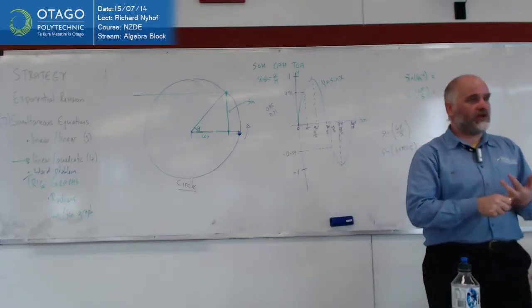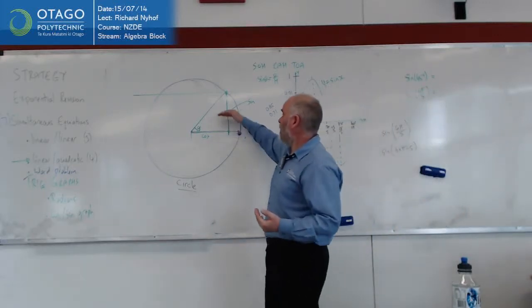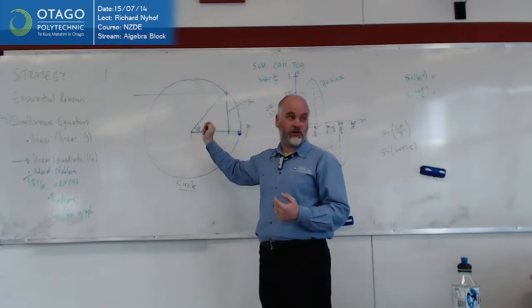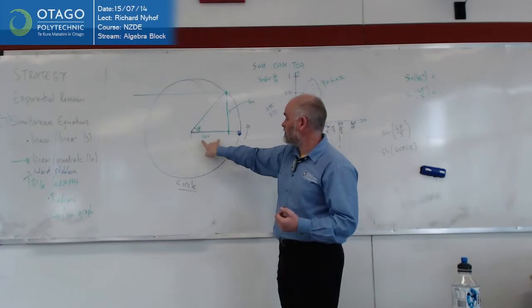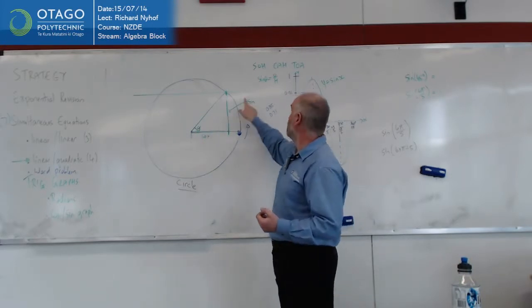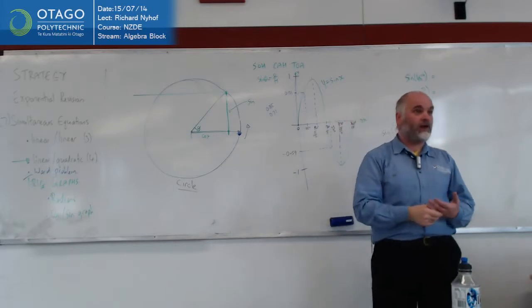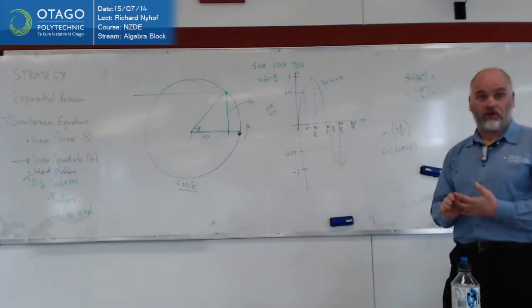Okay, so sine answers the question, how far up are we? But we also want to be able to answer the question, how far across are we? And how far across is the adjacent, which is cosine. So if we do exactly the same thing for cosine, it'll answer the question of how far across we are.